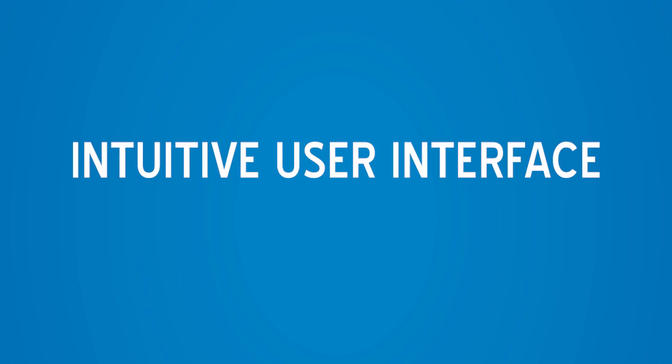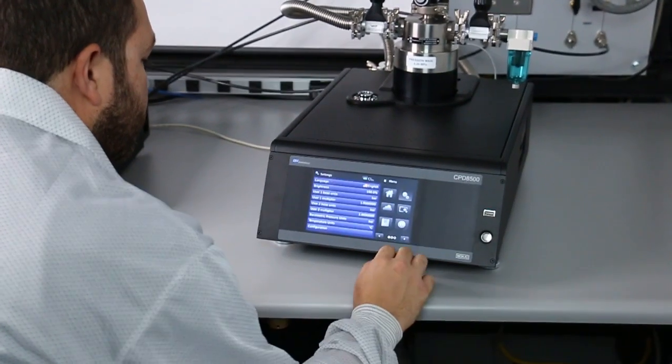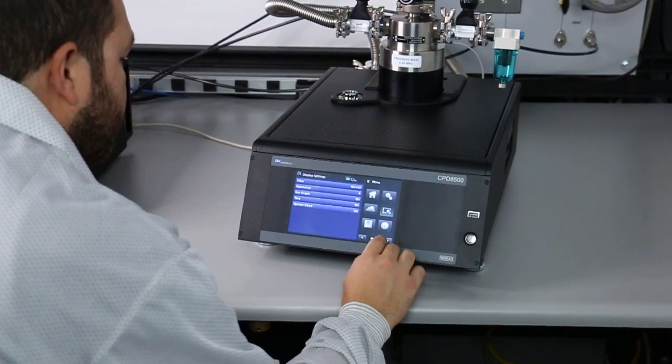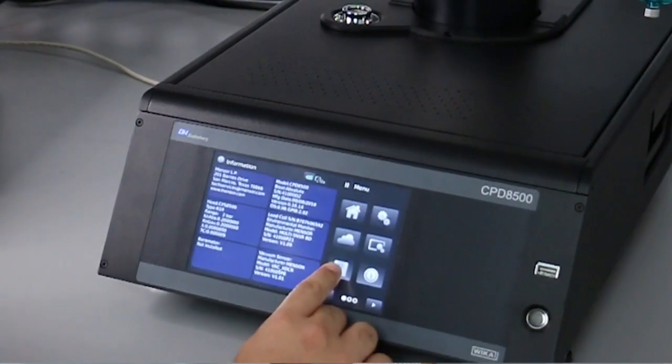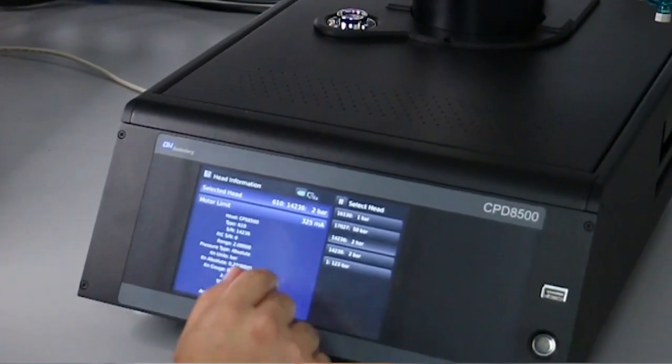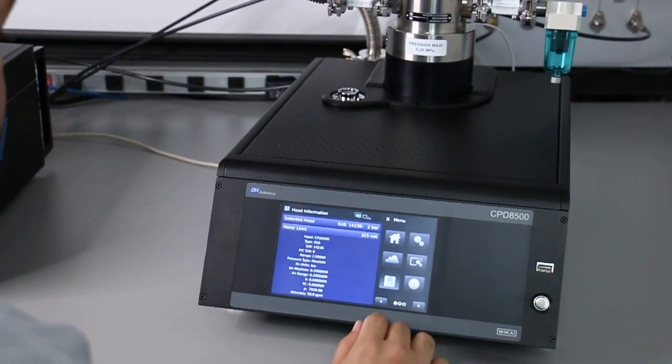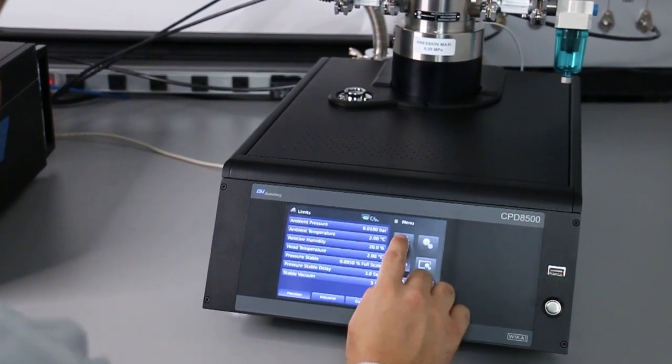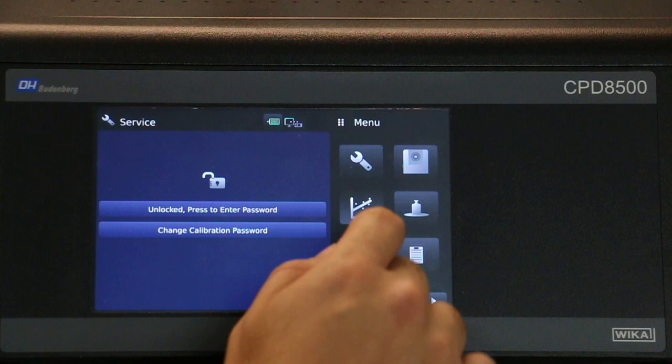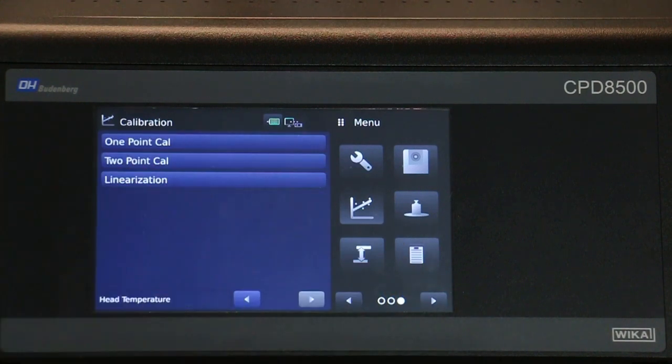The touch screen display shows all information necessary for operation. Navigation to set up screens and measuring head properties is easily achieved by touching graphic icons and following on-screen commands. In addition, all internal sensors are monitored and can be calibrated through the guided calibration menus.